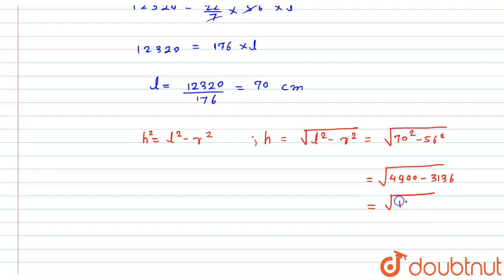And 1,764 is the square of 42. So here I will get the value of h equals 42 centimeter. Hence the height of the cone will be 42 centimeter.